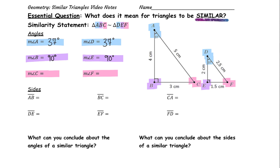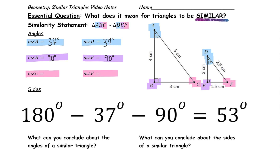Knowing that, we can subtract the other two angle measures from 180 and conclude that the measure of angle C is 53 degrees. And also, the measure of angle F will be 53 degrees.